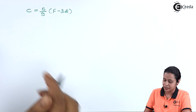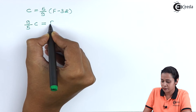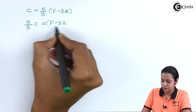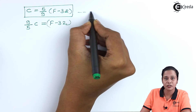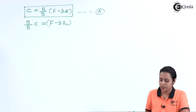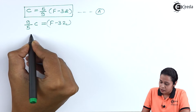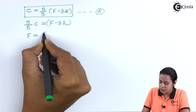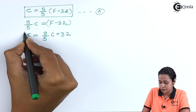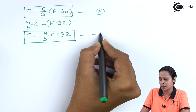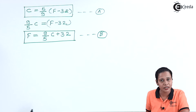Rearranging equation A, we get 9/5 × C = F − 32, so F = 9/5 × C + 32. This is equation B. In this way we can convert Celsius to Fahrenheit or Fahrenheit to Celsius.